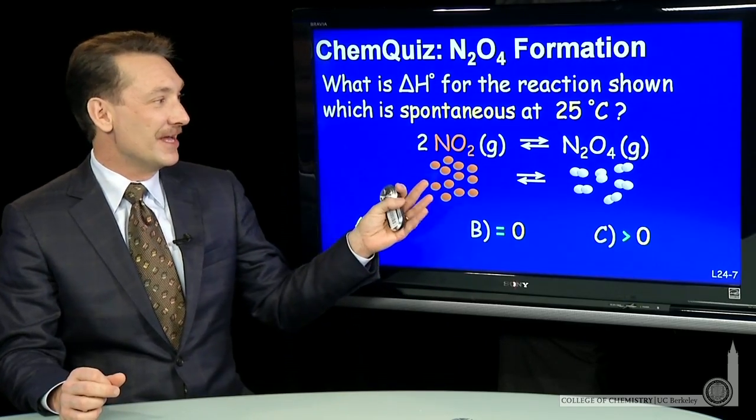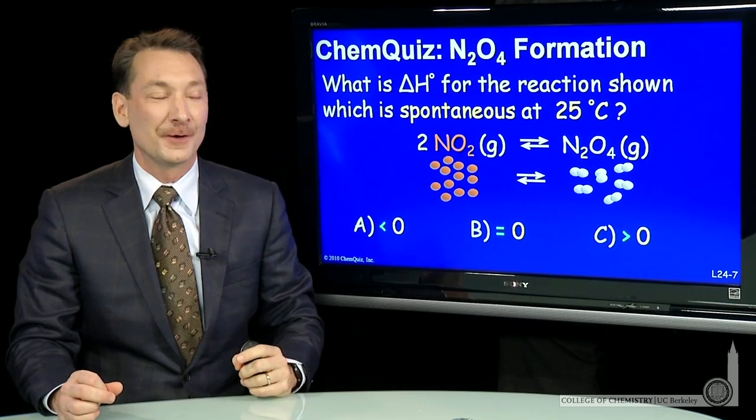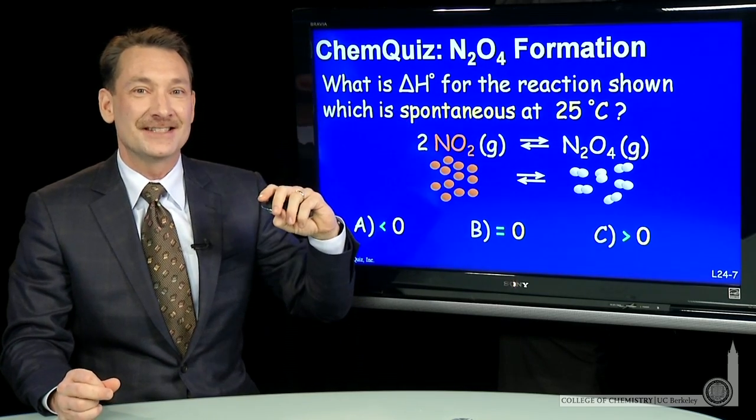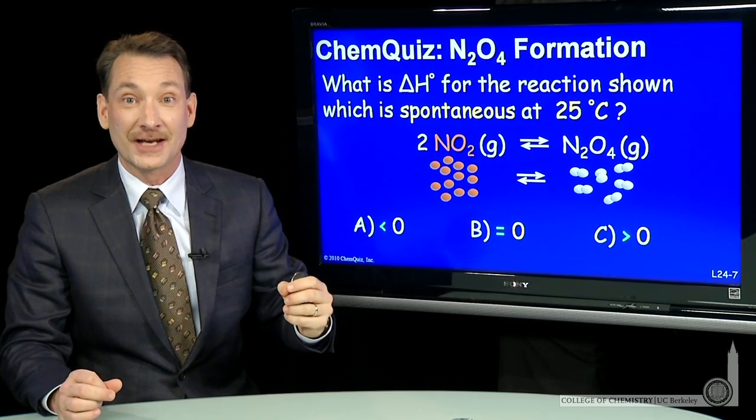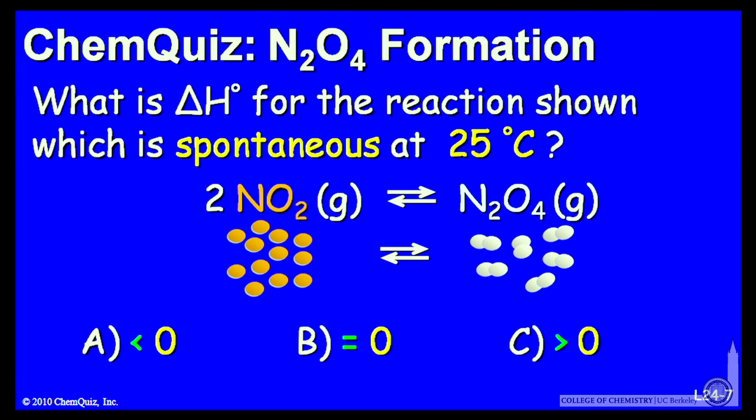Let's look at a chemical reaction here, the dimerization of NO₂ to form N₂O₄. And if I tell you the reaction is spontaneous at 25 degrees C, what can you predict about the enthalpy change for that chemical reaction? Is it greater than 0, equal to 0, or less than 0? Think about that for a minute and make a selection.